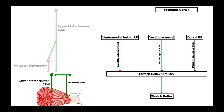If you wanted to activate the stretch reflex, the vestibular nuclei and dorsal reticular formation would need to be activated, and the ventromedial bulbar reticular formation would need to be inhibited. But the CNS functions by sending inhibitory input overall. So what the premotor cortex actually does by default is inhibit the dorsal reticular formation, inhibit the vestibular nuclei, and stimulate the ventromedial bulbar reticular formation — allowing it to inhibit the stretch reflex. The net effect is that the stretch reflex is inhibited, or at least kept at a minimum.